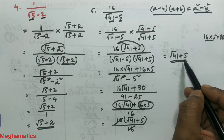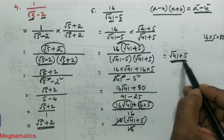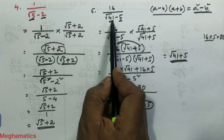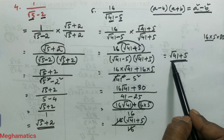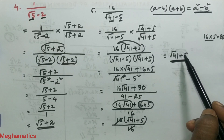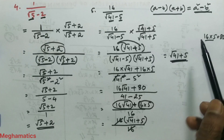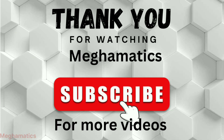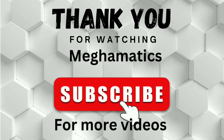There is no root in the denominator, and in fact there is no denominator at all. So the answer is root over 41 plus 5. This is how we rationalize fractions with root over in the denominator. If you understood this, please like the video and subscribe to the channel so I can bring new videos for you to learn more. Thank you so much for watching.